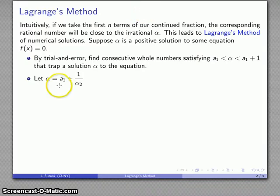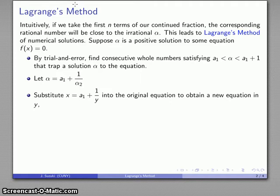We'll let alpha be a₁ plus 1 over something, then substitute this into our original equation. That'll give us a new equation in a new variable and we'll repeat. We'll find two consecutive whole numbers that trap our solution, giving us another integer plus a leftover portion. We'll repeat this for as long as we care to.